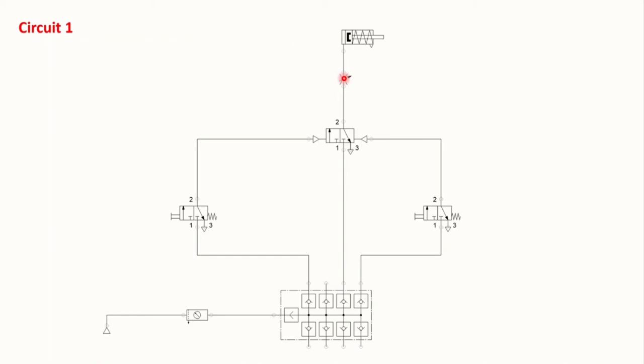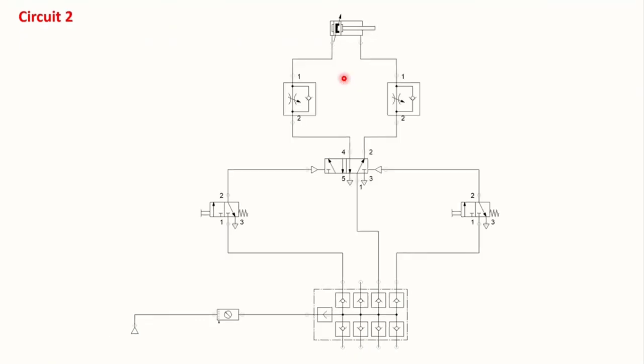We'll see how this throttle valve works inside FluidSIM and how we can change the speed of a single acting cylinder with the use of a throttle valve. The second circuit looks at the application of the throttle check valve. Instead of having one throttle valve, we have two throttle check valves — and you can see the symbol is different.